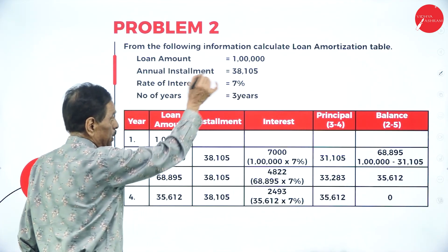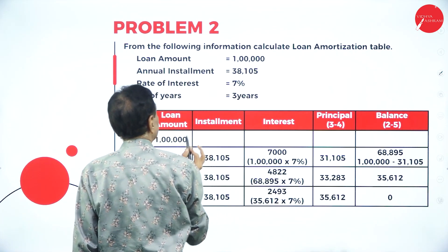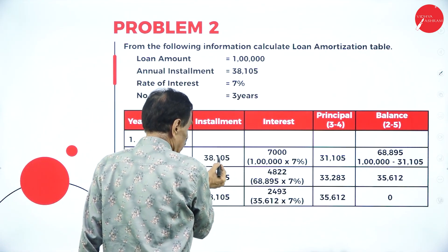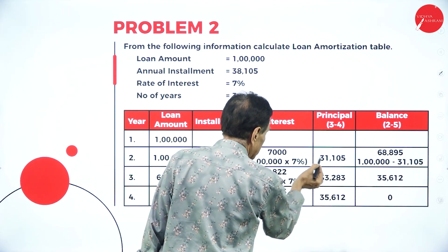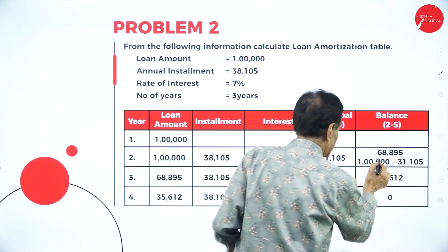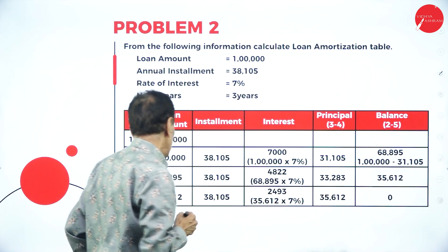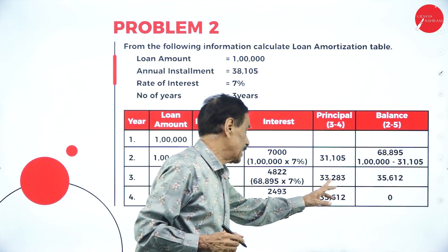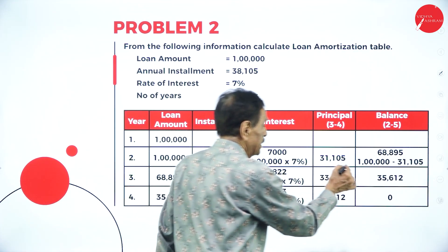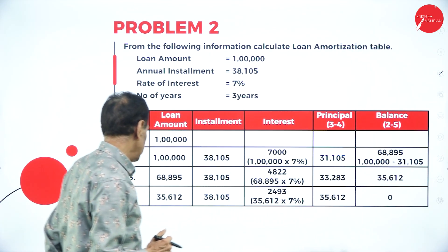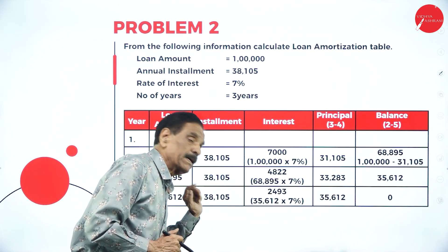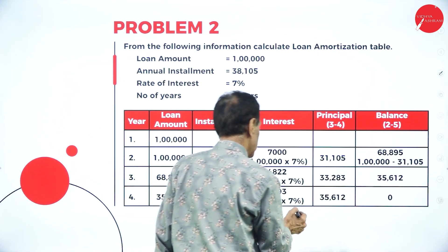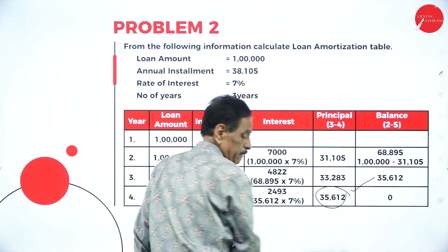Next problem: loan amount is 1 lakh, annual installment 38,105, at 7% for 3 years. Year 1: loan 1 lakh, installment 38,105; 7% of 1 lakh is 7,000. Deduct interest: principal payment is 31,105; balance is 68,895. Year 2: balance 68,895, installment 38,105; interest is 4,822 (approximately); balance 33,283. Year 3: loan balance 35,612; installment 38,105; interest on this is 2,493; balance clears — no remaining amount.